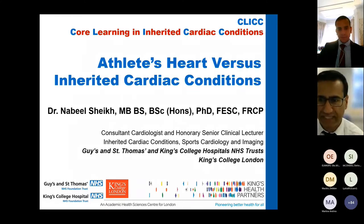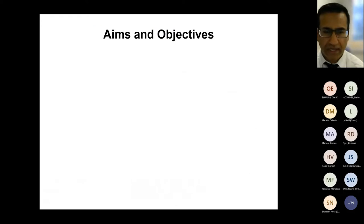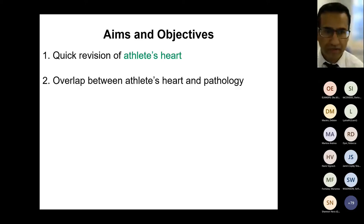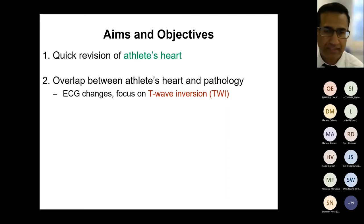Nabil is a consultant at St Thomas's and he's going to talk to us about the athlete's heart versus inherited cardiac conditions, which is quite a common dilemma when assessing athletic individuals. Thanks very much Nabil. So as Abbas says, I'm going to talk to you today on athlete's heart versus inherited cardiac conditions. There's an awful lot to cover. I'll start by some aims and objectives, beginning with a quick revision of the athlete's heart, and in particular I want to look at the overlap that occurs between athlete's heart and pathology.